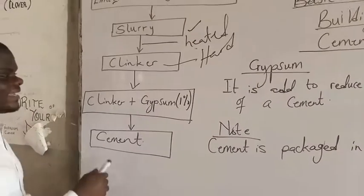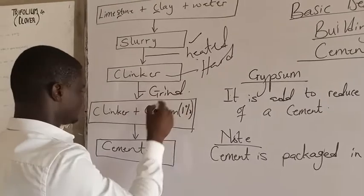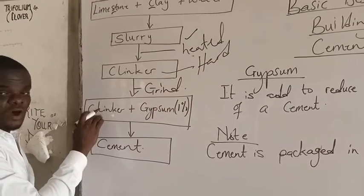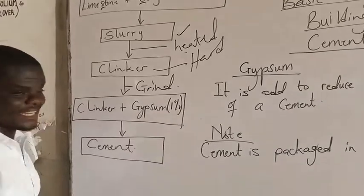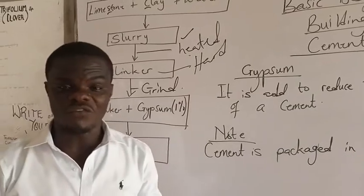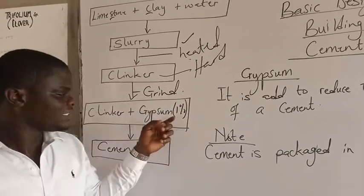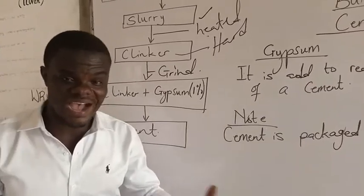Now that clinker is then ground into the powdered form. Then 1% of gypsum will be added to it. Now this gypsum is added to the cement to reduce the rate of hardening of the cement.